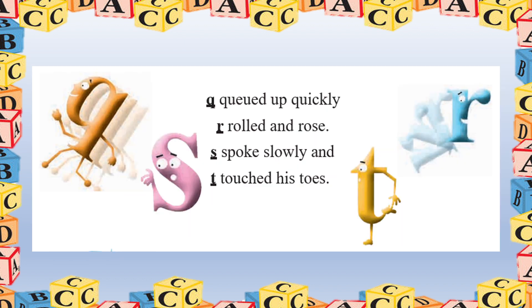Q queued up quickly. R rolled and rose. S spoke slowly and T touched his toes. Now repeat after me — Q queued up quickly, R rolled and rose, S spoke slowly and T touched his toes.